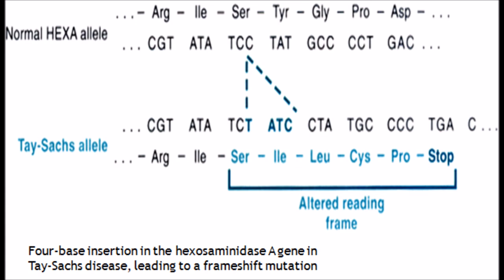Tay-Sachs disease used to be most common in people of Ashkenazi Jewish descent. Most Jewish people in the UK are Ashkenazi Jews. It is thought that around 1 in 25 Ashkenazi Jewish people are carriers of the mutated gene that causes Tay-Sachs disease. However, with screening, the condition is now rare and most cases occur in people who aren't of Ashkenazi Jewish descent. It is estimated that only around 1 in every 360,000 children born worldwide has Tay-Sachs disease.